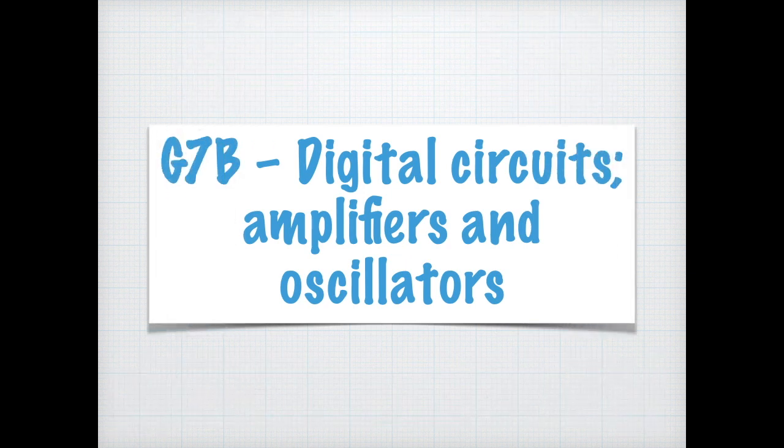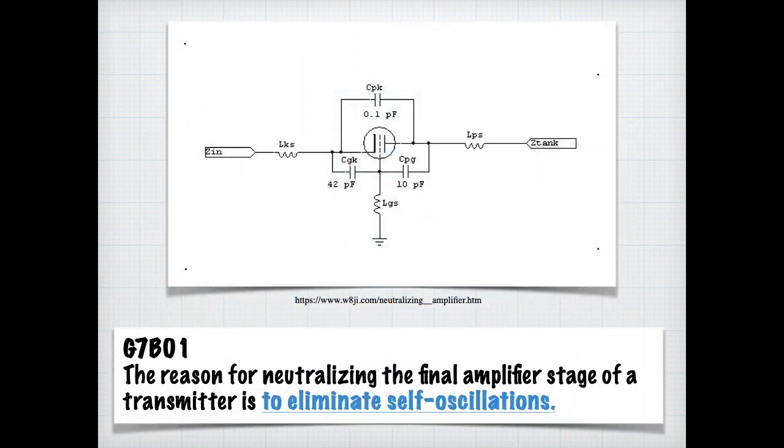Next up, section G7-B, Gulf 7 Bravo, digital circuits, amplifiers, and oscillators. This deals more with vintage equipment and modern amplifiers as well. But just know for the exam that the reason for neutralizing the final amplifier stage of a transmitter is to eliminate self-oscillations.